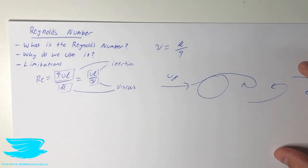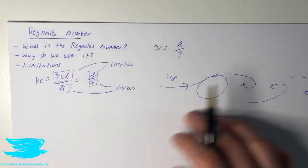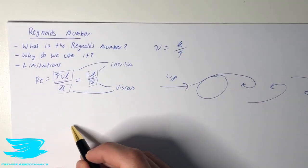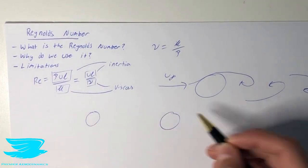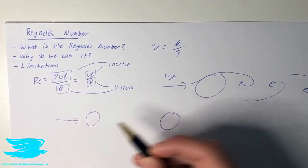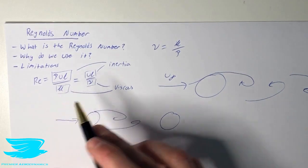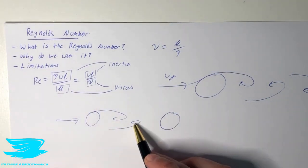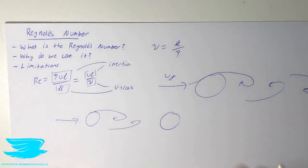This has major implications not just for wakes but for boundary layers as well. Let's say we have one cylinder upstream and another cylinder downstream. If we have a very low Reynolds number, by the time we get to the second cylinder, these vortices will die out, so this second cylinder will see much cleaner flow.